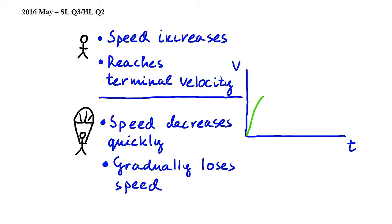Then, due to air resistance, she reaches terminal velocity, which means that the graph flattens out.